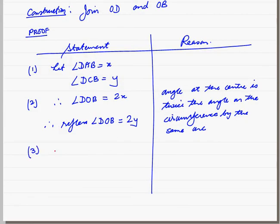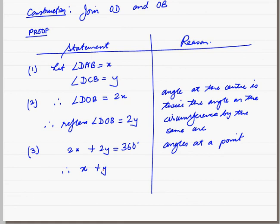Statement 3: Now, 2X plus 2Y is equal to 360. Why? Angles at a point add to 360. Dividing throughout by 2, therefore X plus Y is equal to 180.